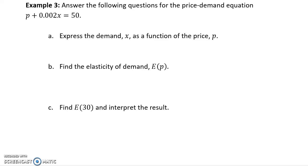In example 3, we're given a different price-demand function. But, in this case, we have the added step that this function isn't solved for x. So, our first step will be to take this function and solve for x, which would give us x is equal to 25,000 minus 500p.